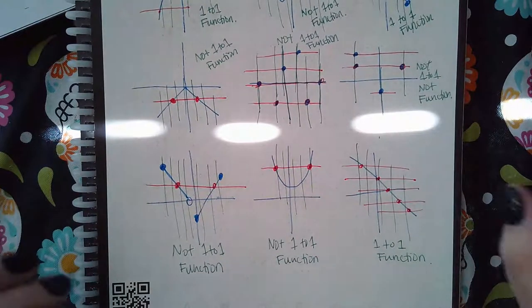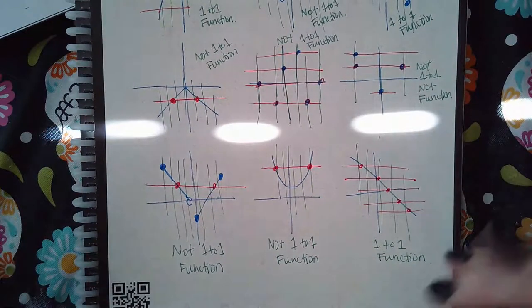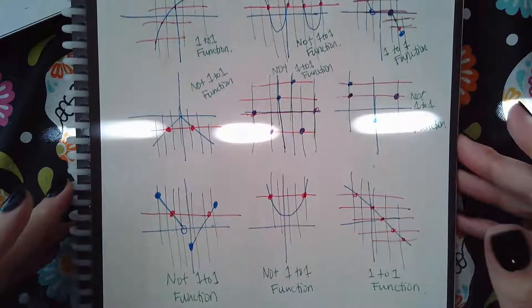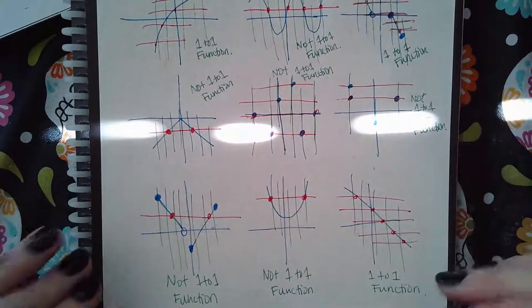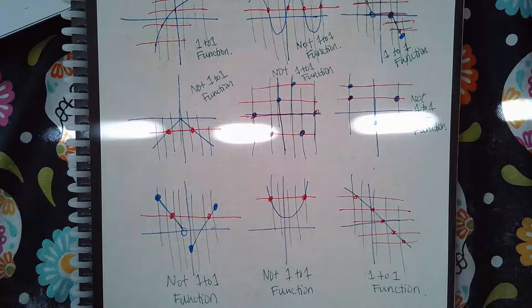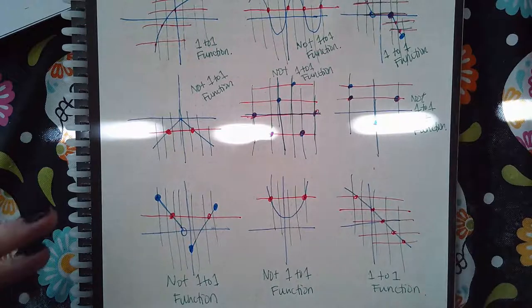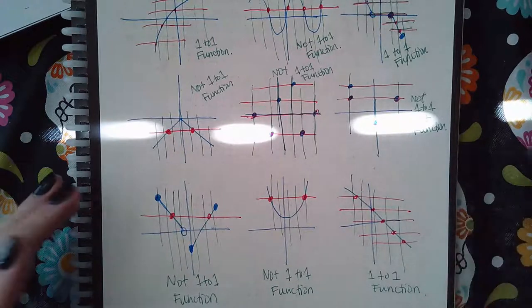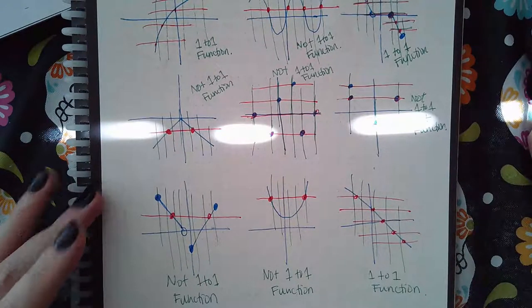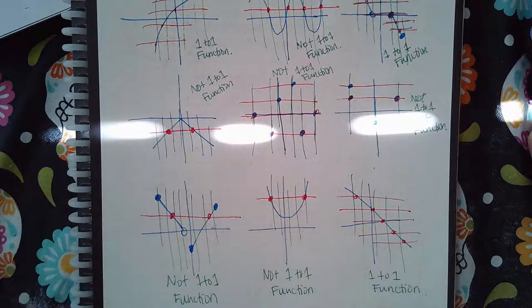The vertical line test tells you whether or not it's a function, and the horizontal line test tells you whether or not that function is one-to-one.